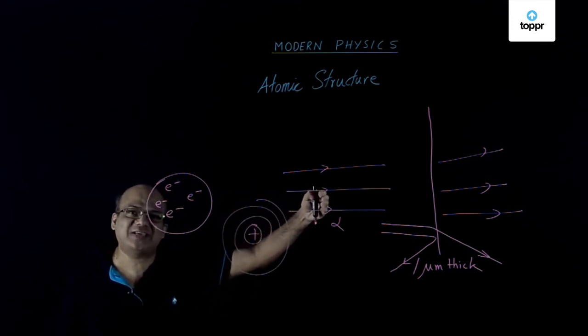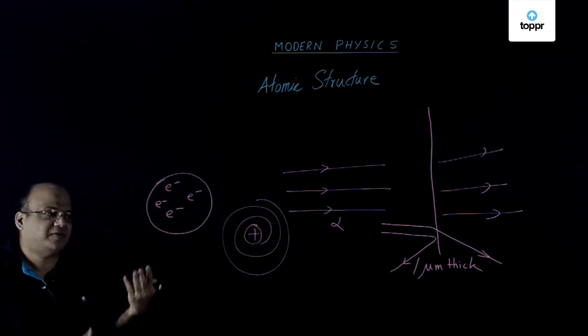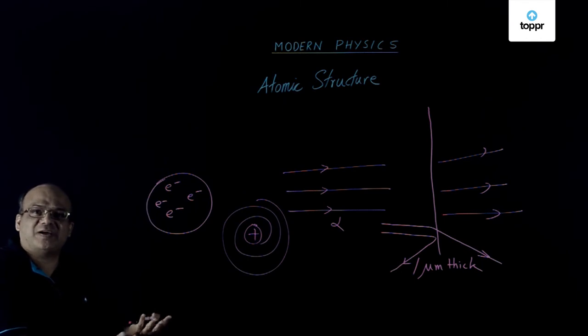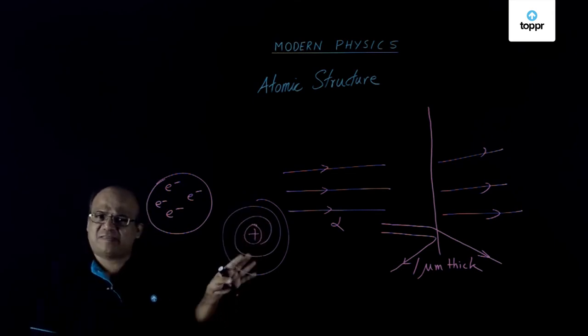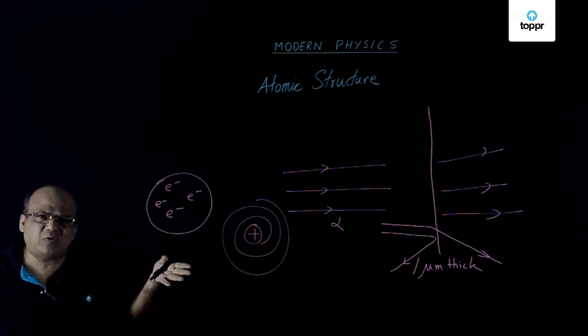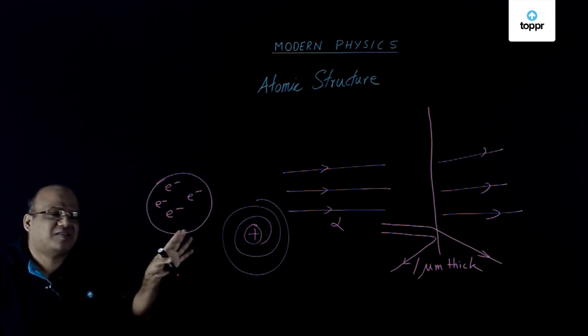Continuously it is losing energy. So kinetic energy will come down and it will follow this kind of spiral path and fall into the nucleus. But atom is stable. Electrons do not fall into the nucleus. So something is wrong with this model.